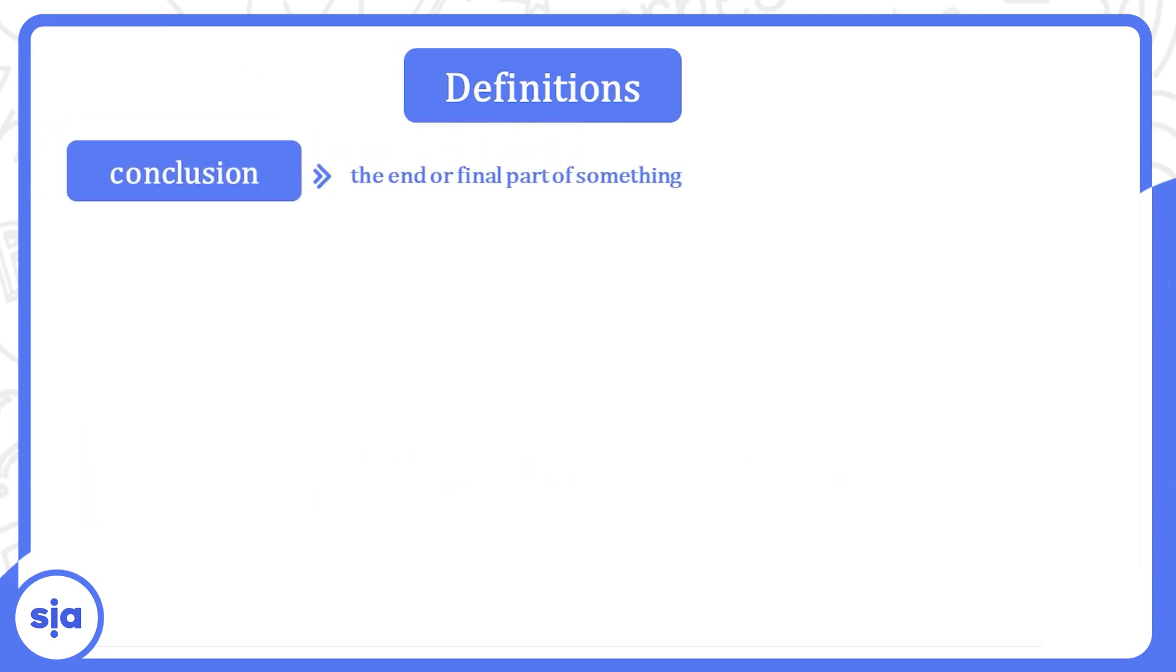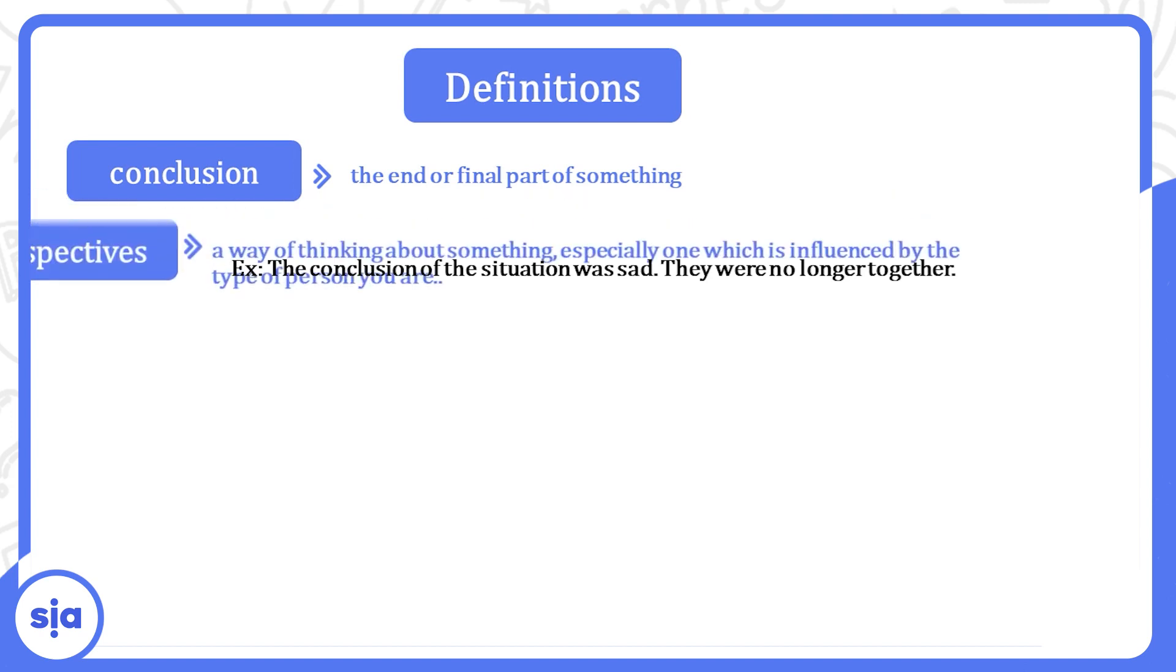Conclusion. The end or final part of something. طبعاً conclusion إحنا عارفينها من الwriting. معناها الخاتمة أو الختام. The conclusion of the situation was sad. ختام الموقف كان حزين. They were no longer together. هم خلاص ما بقوش مع بعض.